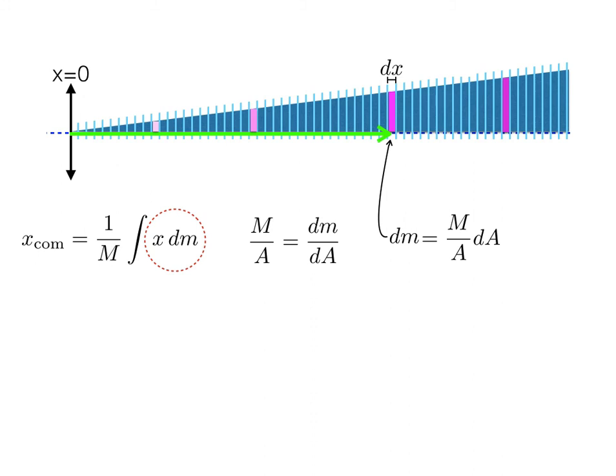Now, dA is the area of a small dm, which will be the height y multiplied by the width dx. Note that the equation for the line that goes along the top of the triangle is y equals h over w times x, where h is the height of the triangle and w is the width of the triangle. And the area of the triangle is going to be one half its width times its height.